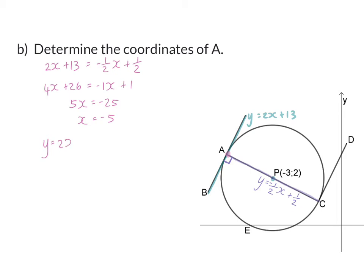To calculate the corresponding y value I can substitute into either of the two straight line equations and I'm going to substitute into the tangent by changing x to -5. Therefore my y coordinate will be 3. My final answer is that coordinates of A are (-5, 3).